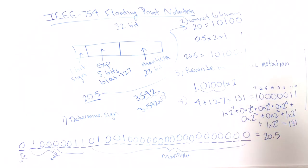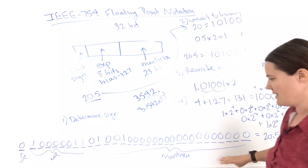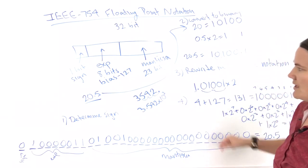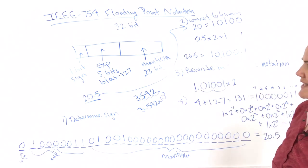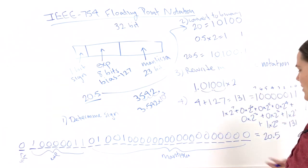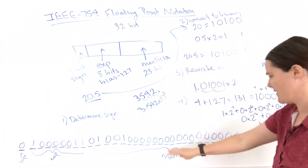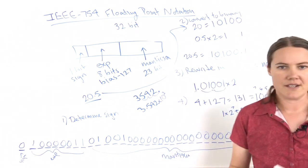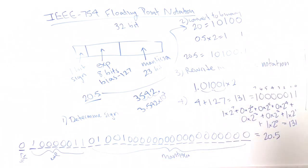So this is the complete floating point notation for 20.5. If you put 20.5 into your computer and it converts it to IEEE 754 floating point notation, this is what is actually stored.